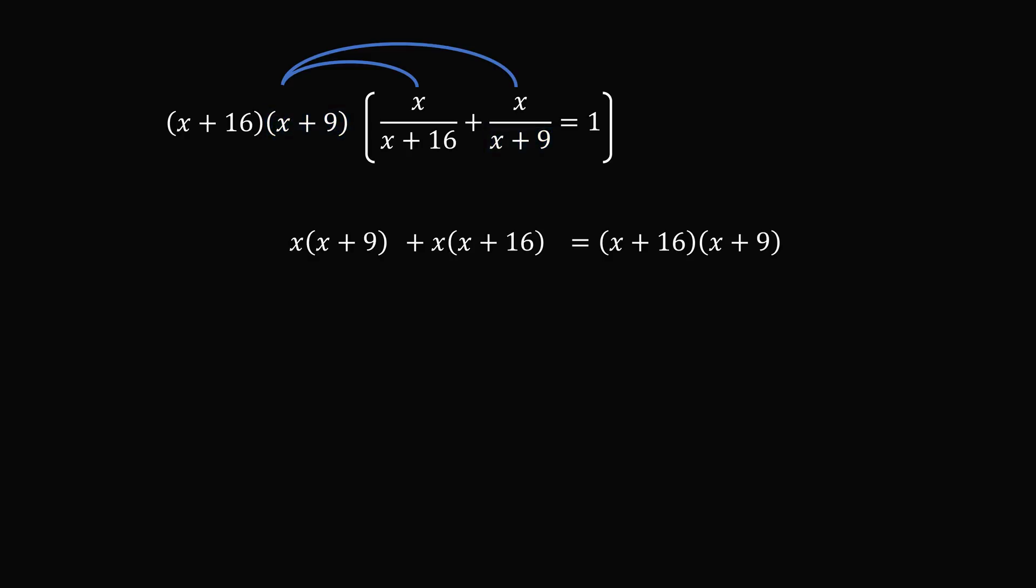We can now simplify this equation. We need to distribute on both sides. So the first factor will become x squared plus 9x. Then we have x squared plus 16x, and this is equal to x squared plus 25x plus 144.